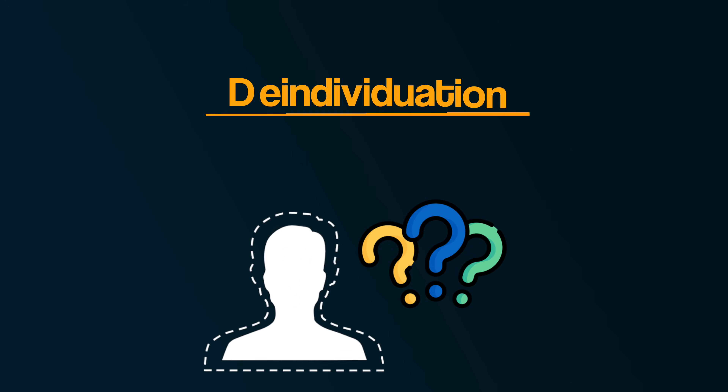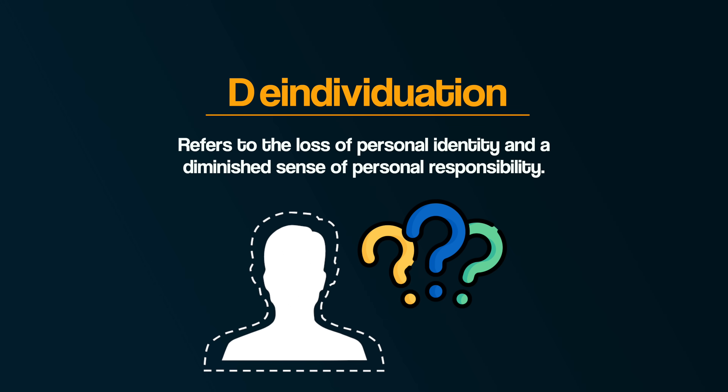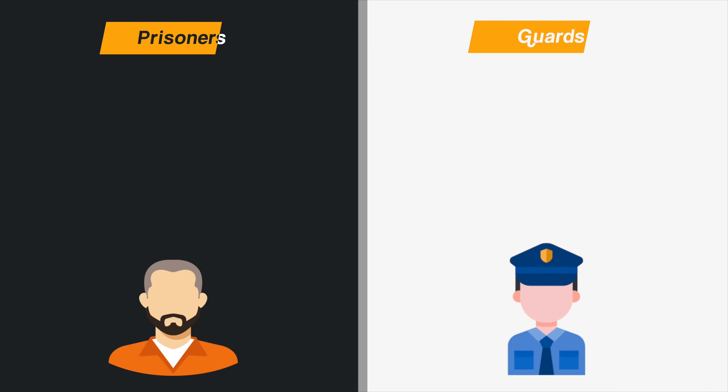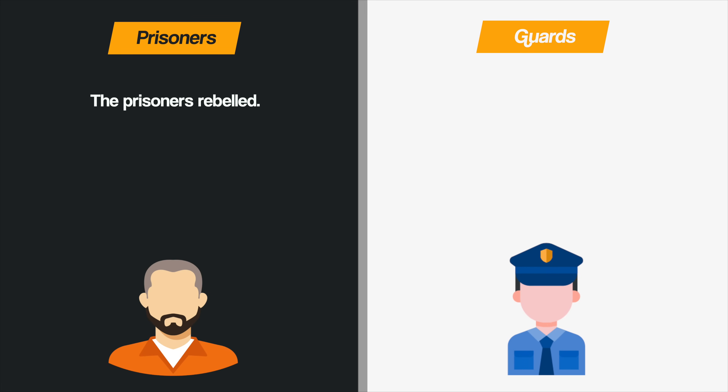A key concept central to the experiment is deindividuation — the loss of personal identity and a diminished sense of personal responsibility, which often leads people to act in ways they normally wouldn't. In the prison, anonymity came from uniforms, ID numbers, and strict routines, stripping away individuality and encouraging conformity to social roles.